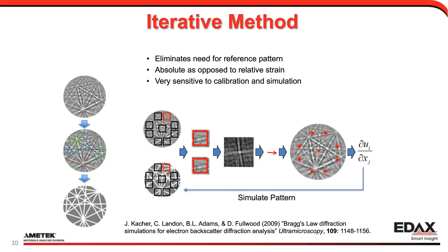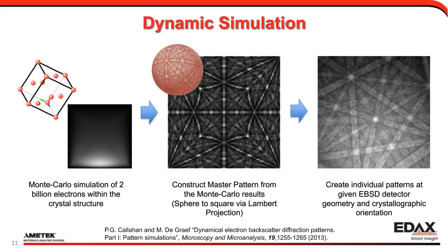This technique has been around for more than a decade and is becoming more accepted in the EBSD community. There is an iterative method that attempts to eliminate the need for reference patterns — you take a pattern, index it, simulate a pattern from that, and then iteratively fit the displacement gradient tensor. However, it's very sensitive to calibration and simulation. This continues to be a research area, but it's improving because of the emergence of dynamic simulated patterns that look much more like experimental EBSD patterns.